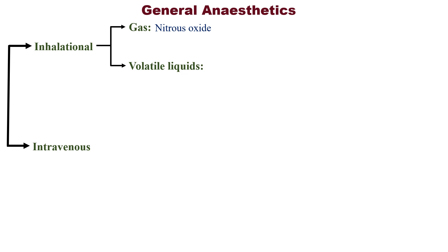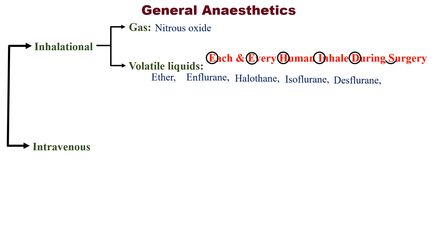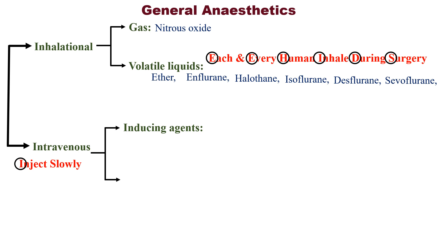There are too many drugs under volatile liquids. To remember all of them, use this mnemonic: 'Each and every human inhale during surgery.' E for Ether, another E for N-flurane, H for Halothane, I for Isoflurane, D for Desflurane, and S for Sevoflurane. Then, intravenous anesthetics are divided into inducing agents and slower acting drugs.